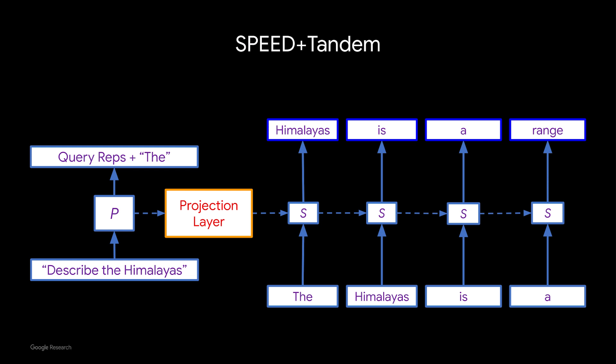To achieve that, we can combine Tandem with a technique called speculative decoding, which was also designed by my colleagues at Google. In speculative decoding, through the secondary model we speculate a bunch of tokens that the primary model will generate. Once these tokens are generated, we run the primary model to verify which tokens are correct, and wherever we find a mismatch, we go back to that point and start generation from there.